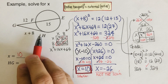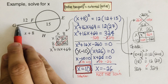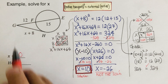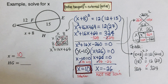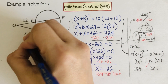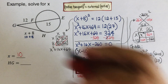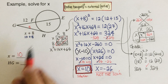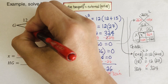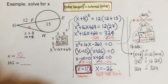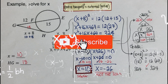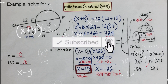With x = 10, we can now find the length HG, which is the tangent. We know GF is 12 and FE is 15. Plugging x = 10 into (x + 8): 10 + 8 = 18. So HG = 18. If you found this video helpful, please like and subscribe for more math videos.